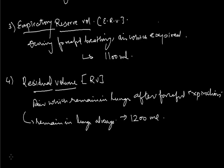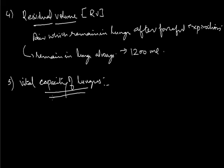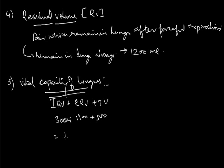Next is the Vital Capacity of the lungs, which includes IRV plus ERV plus Tidal Volume — that is 3000 ml plus 1100 ml plus 500 ml — giving approximately 4600 ml as the vital capacity of the lungs.